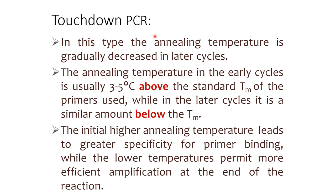In Touchdown PCR, the annealing temperature is gradually decreased in later cycles. The annealing temperature in early cycles is usually 3 to 5 degrees centigrade above the standard Tm of the primer used, while in later cycles it is below the Tm of the primer. The initial higher annealing temperature leads to greater specificity for primer binding, while the lower temperature permits more efficient amplification of the DNA at the end of the reaction.